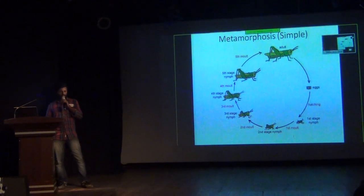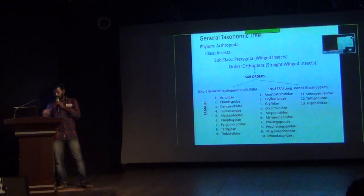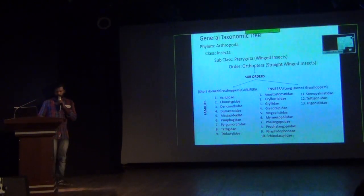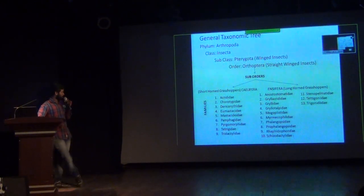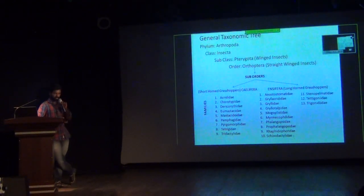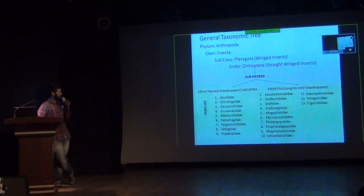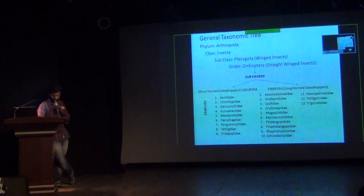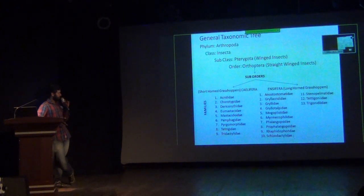A nymph develops directly into the adult. This is the taxonomic tree — Orthoptera is generally divided into short-horned and long-horned grasshoppers, that is Caelifera and Ensifera. In Caelifera, there are 9 families reported from India, and in Ensifera, there are 13 families reported from India.